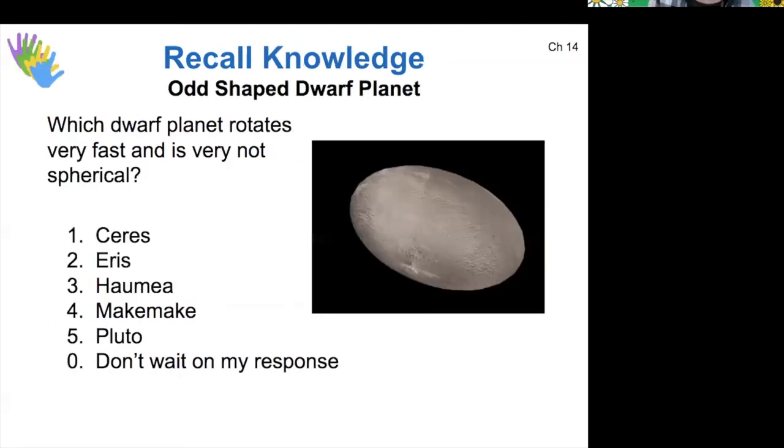We've seen this before, so just for fun here. Do you remember the name of this object, this dwarf planet that rotates fast and is therefore very much not a sphere? Okay, this was just to see if you remembered. This one was actually Haumea.